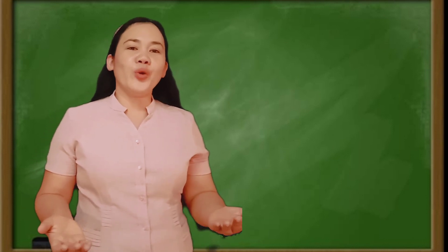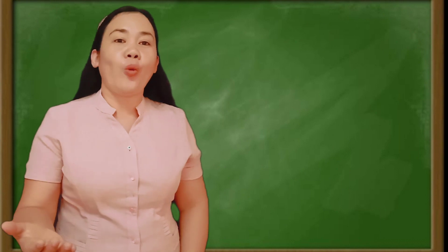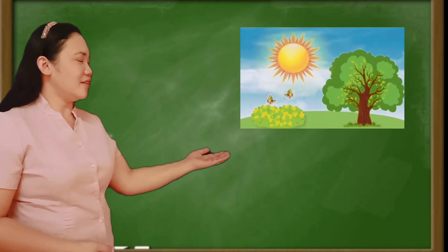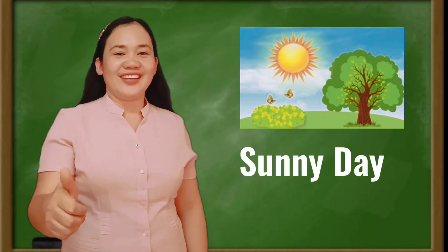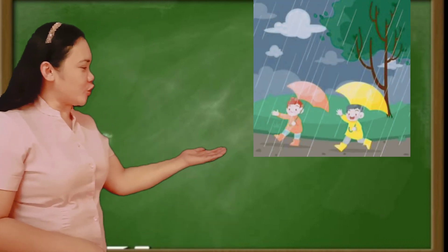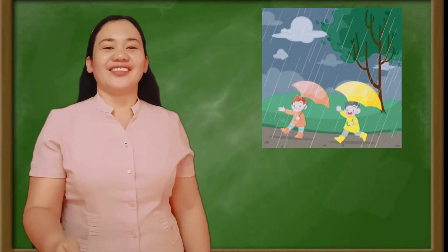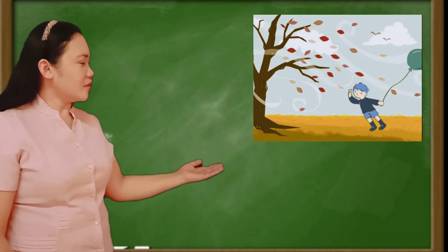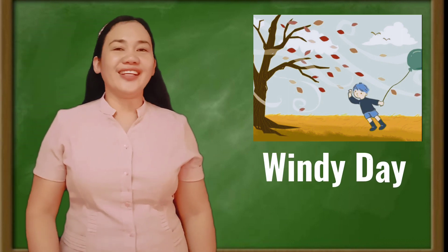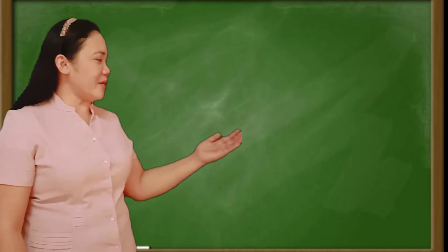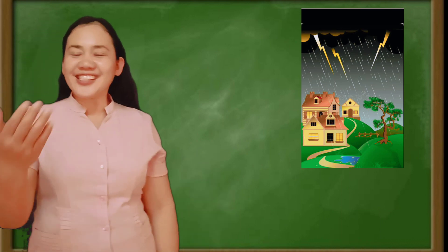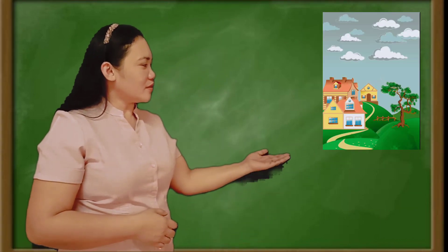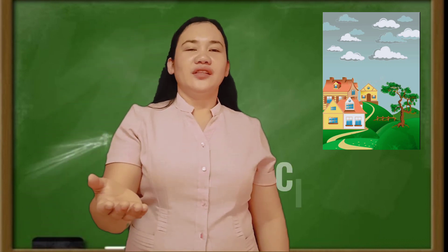This time, let's review about weather conditions. Identify the weather conditions of the given pictures. Let's have number one — correct! It is a sunny day. How about number two? Excellent! That is a rainy day. Third, very good! That is a windy day. And the last? Very good! Cloudy day.